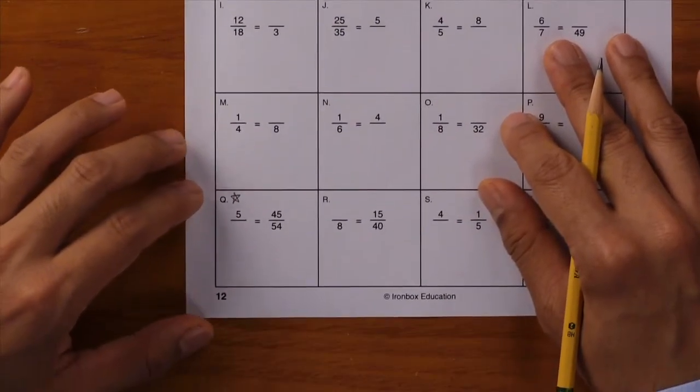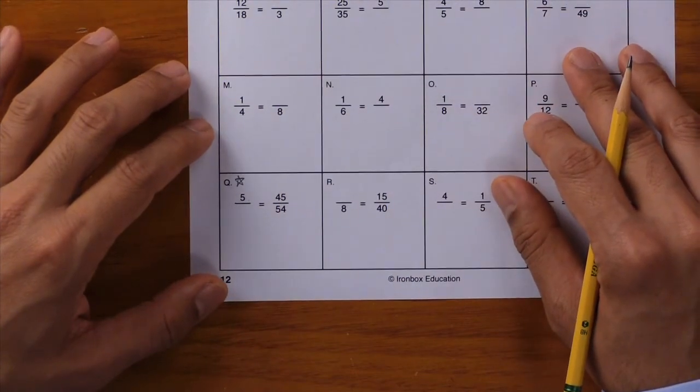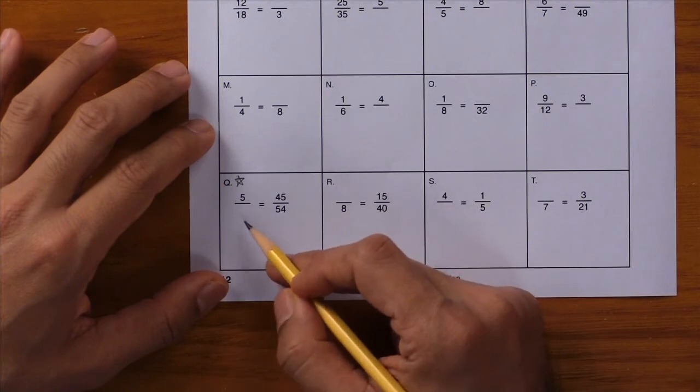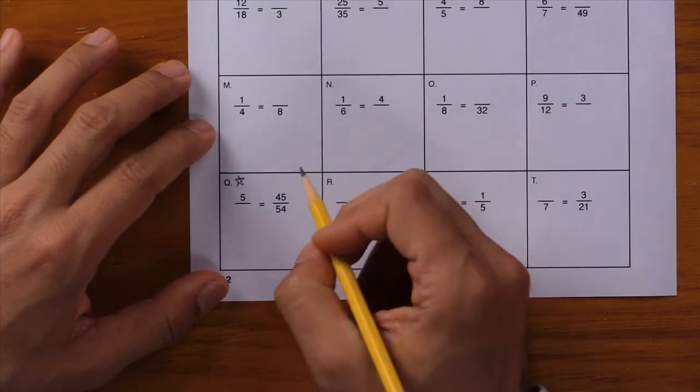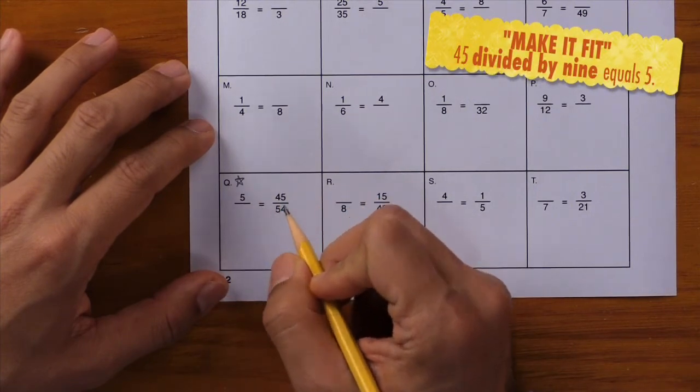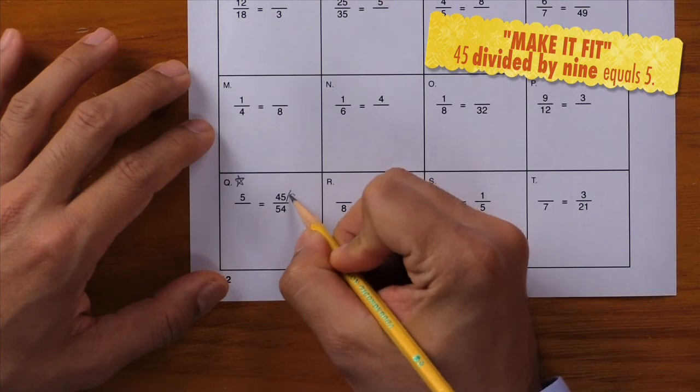Now let's look at letter Q. Here, this problem might look like it's written backwards compared to the other problems, but just remember, go from the full side to the empty side and you'll be okay. So here, how did we go from 45 to 5? We got there by dividing by 9, so I'll write down divide by 9.